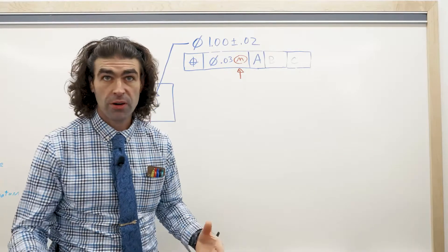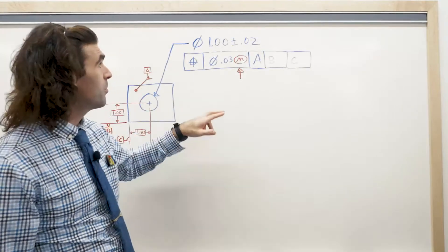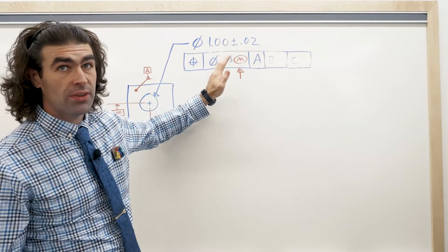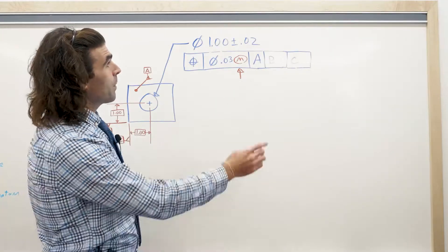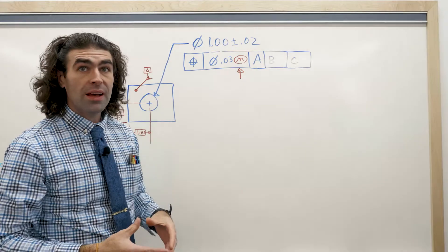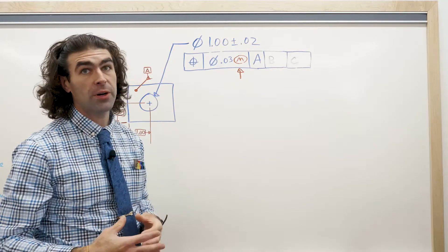So how much larger? Bonus tolerance you get, the additional tolerance, is equal to the difference between where this actually comes in and the MMC. So if you notice the total tolerance on this size is 40 thousandths, you have 40 thousandths potential bonus tolerance.